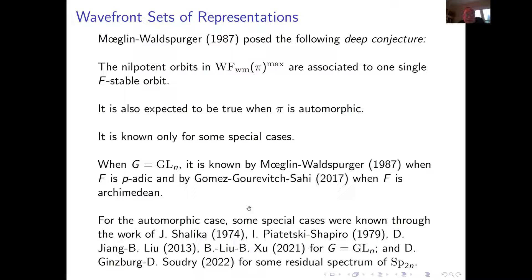For the automorphic case, special cases include Shalika-Piatetski-Shapiro for GL for cusp forms, and my work with Baiying — and Baiying with Bing Shu — for GL residues. Baiying and Shu extended to more general situations. Ginzburg and Soudry also handled some more residue spectrum cases for Sp_{2n}. One can prove this singleton property — the so-called singleton conjecture — but in general it is not known.